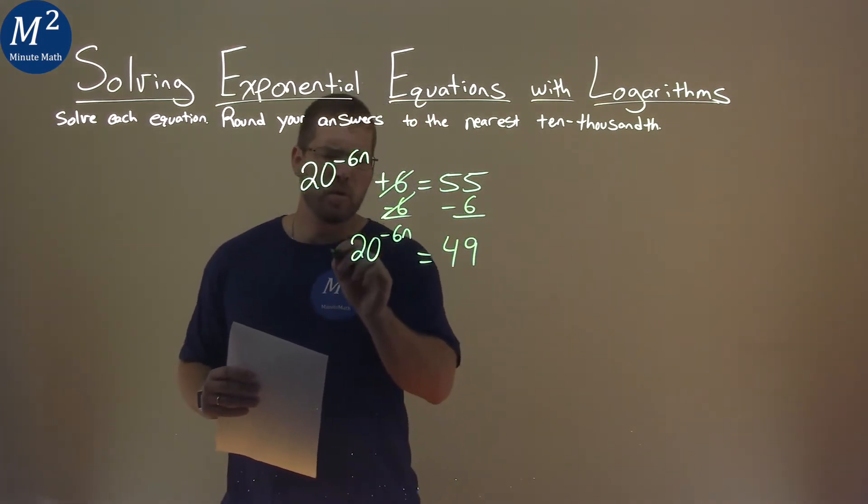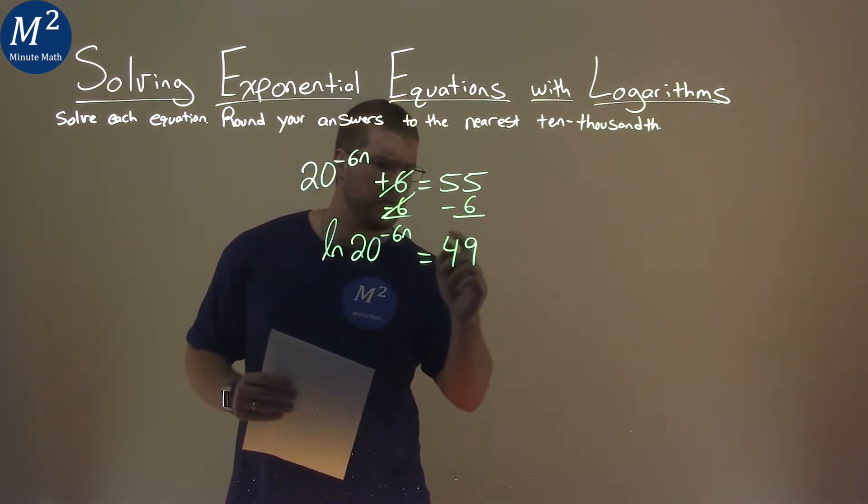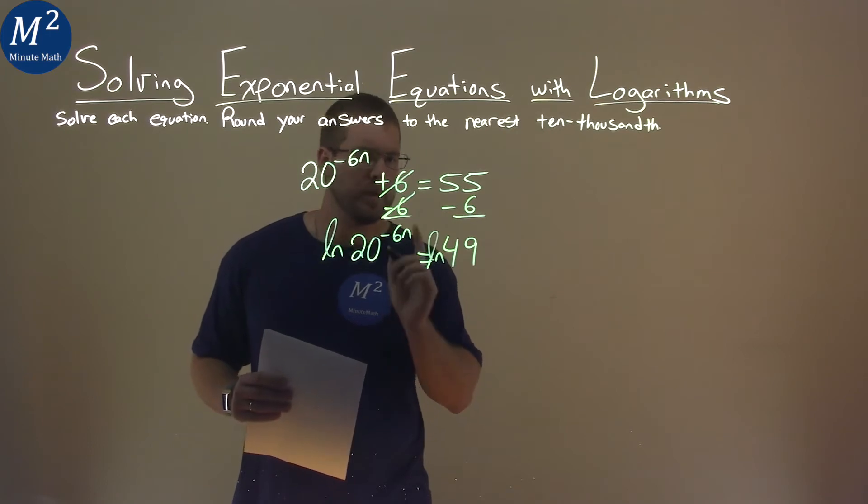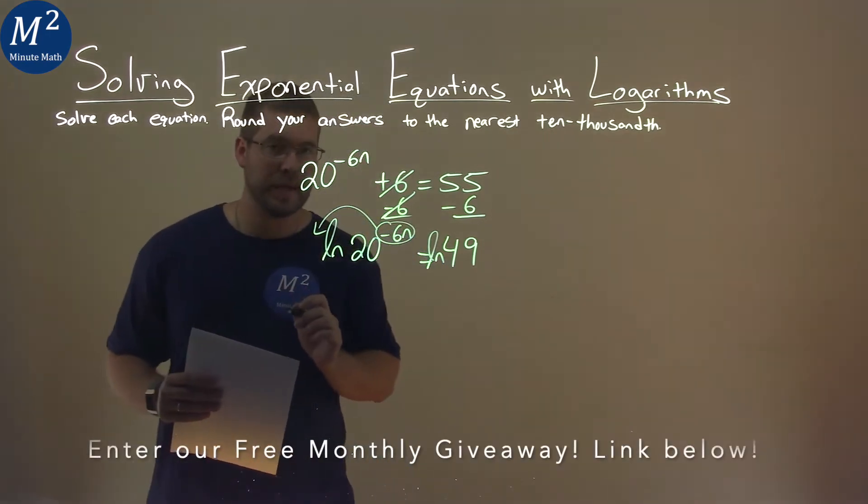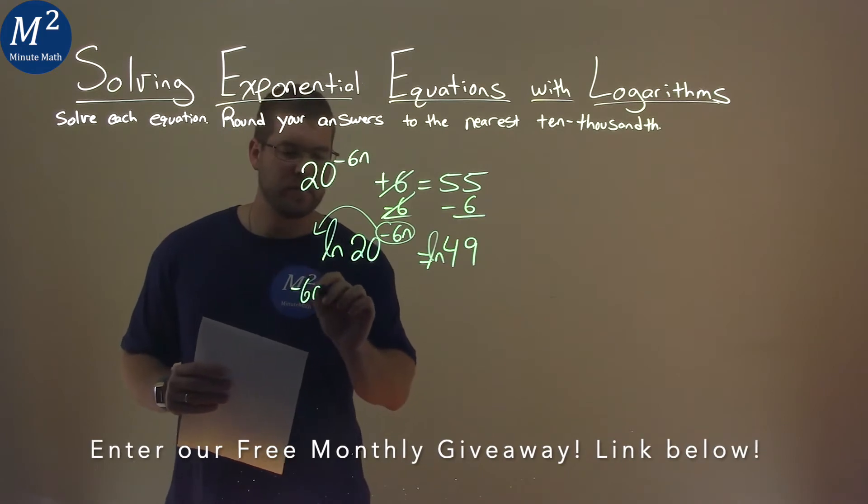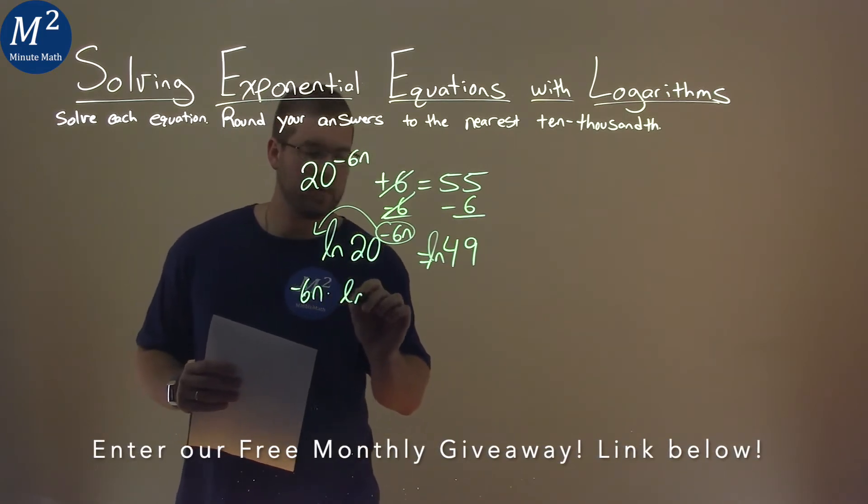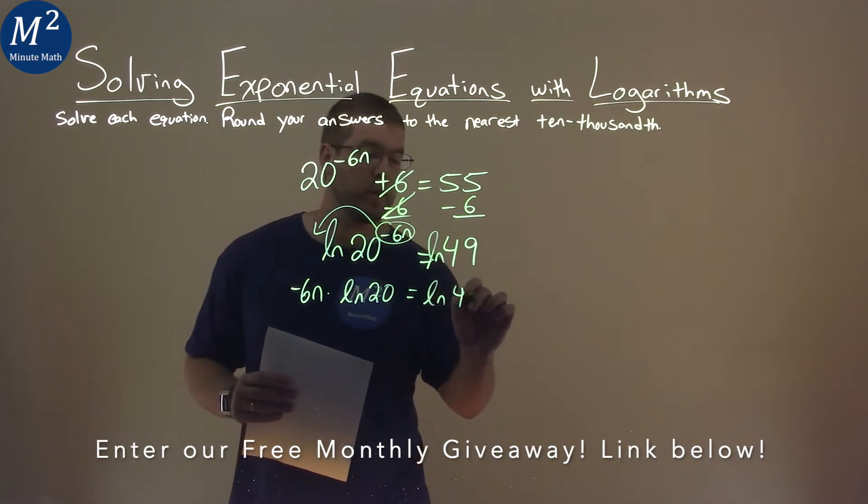But then from here, we're allowed to take the natural log of both sides of the equation. When we do that, our exponent can come out front with multiplication. So we have negative 6n times natural log of 20 is equal to natural log of 49.